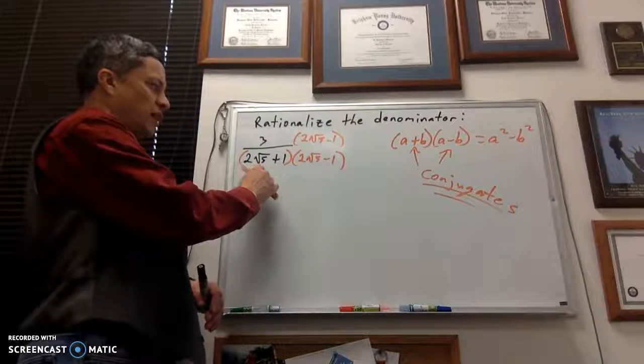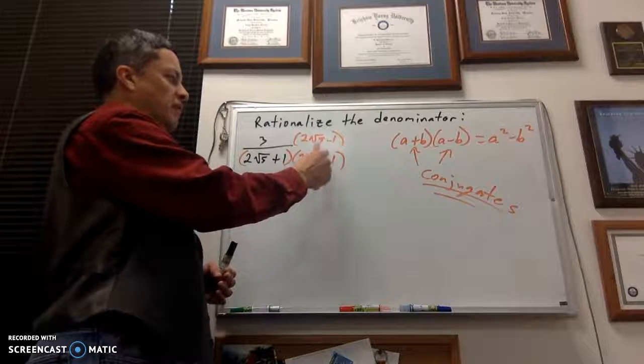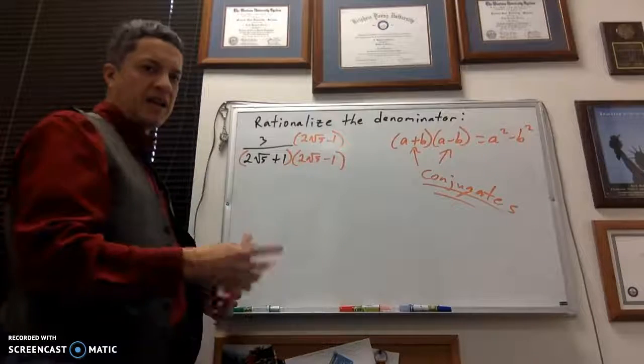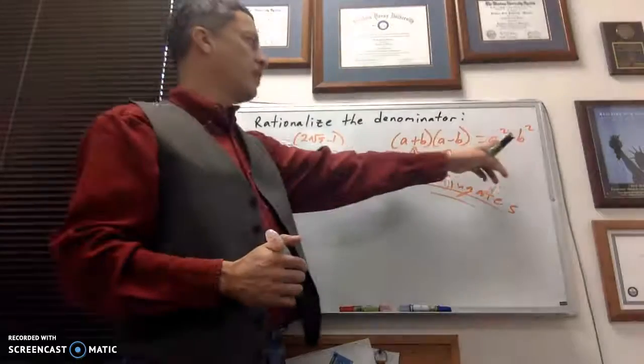If this was 2 root 5 minus 1, its conjugate would have been 2 root 5 plus 1. You just change the middle sign. It's all you're doing. And that will give me my conjugate, because look what's happening over here.